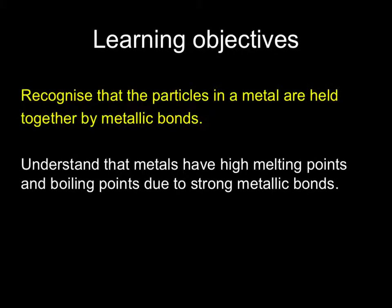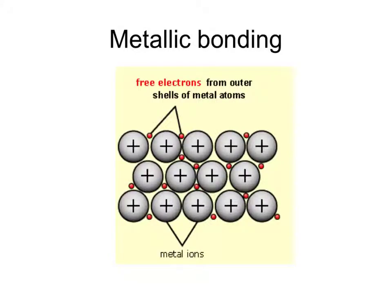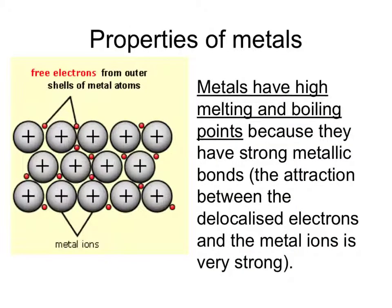Next we learn about the bonding in a metal. We've learnt about ionic bonding and covalent bonding — here's a third kind: metallic bonding. The atoms of metals are packed very closely together in a regular arrangement. The atoms form ions where one or two outer electrons are allowed to roam from one atom to another — we call these free electrons. These electrons are negatively charged and they attract the positively charged ions by strong electrostatic attractions. Because these metallic bonds are so strong, it takes a lot of energy to separate the metal ions, and therefore metals have high melting and boiling points.